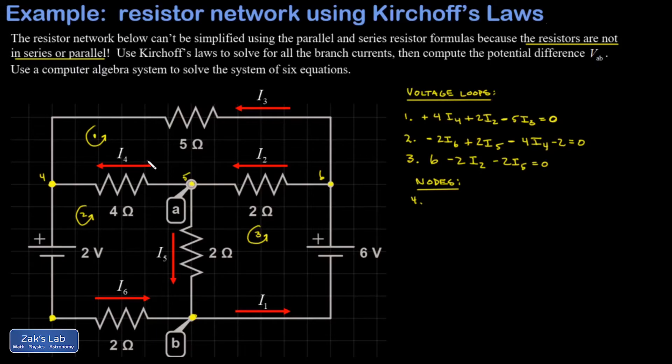At node 4, I4 is coming in and I3 is coming in, I6 is coming out. At node 5, I have I2 coming in, I4 and I5 coming out. At node 6, I have I1 coming in, I2 and I3 coming out. All right, so now we're going to plug all these equations into a computer algebra system and solve the system.